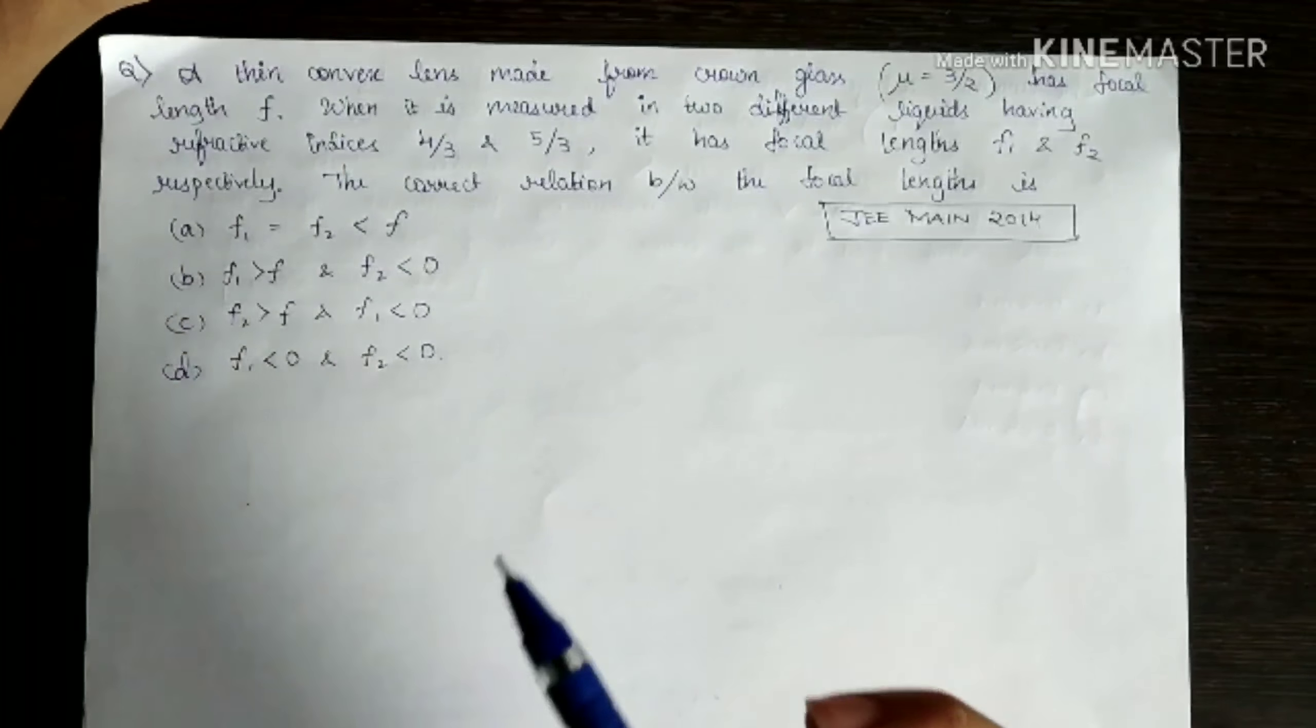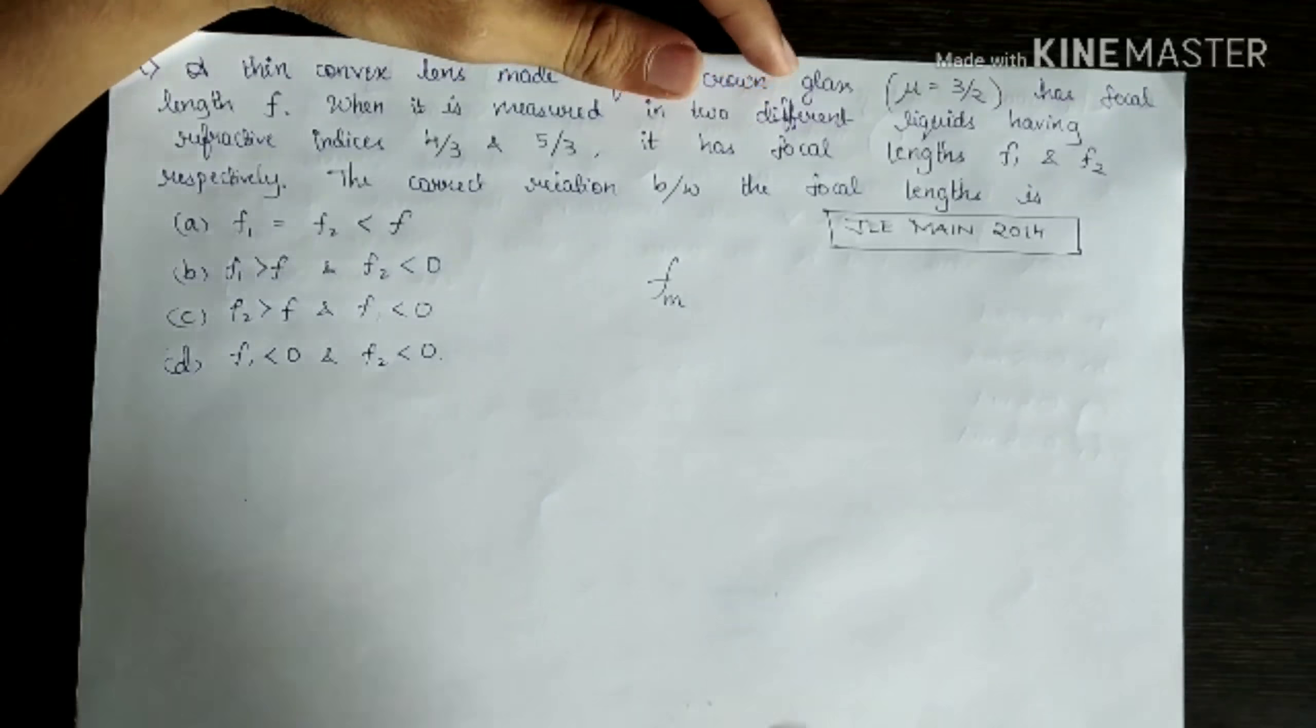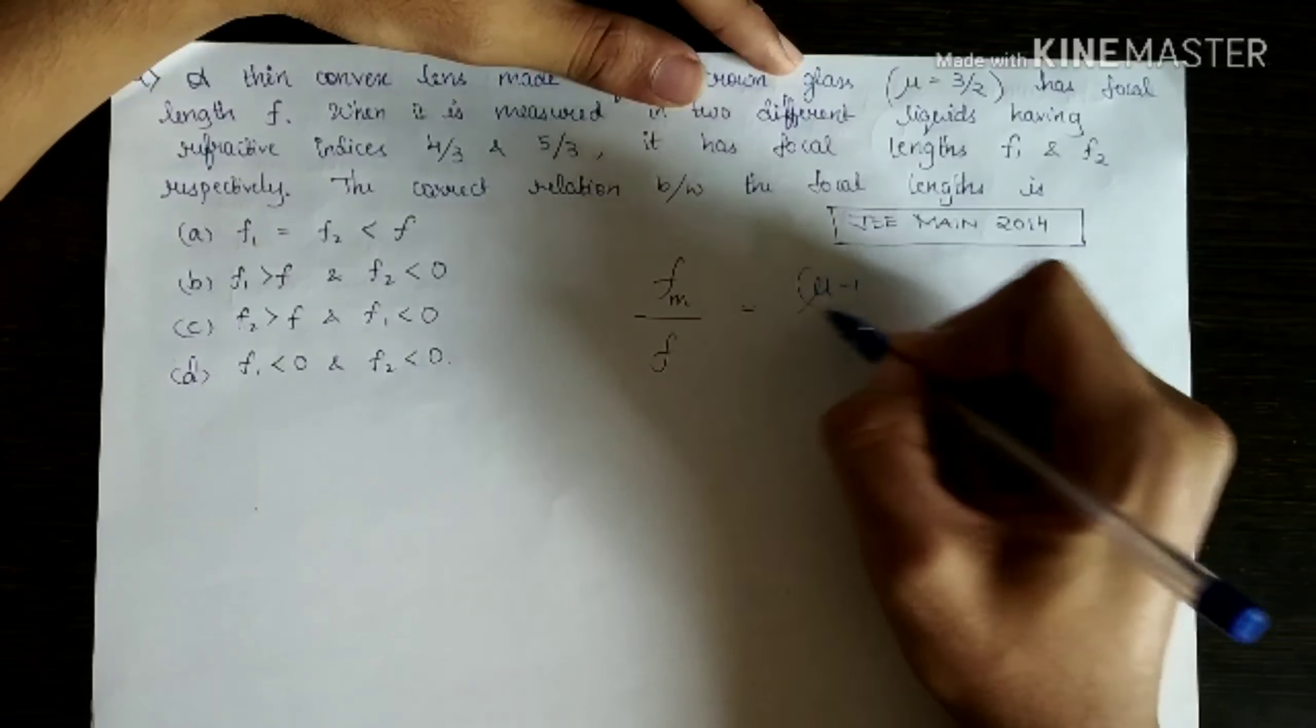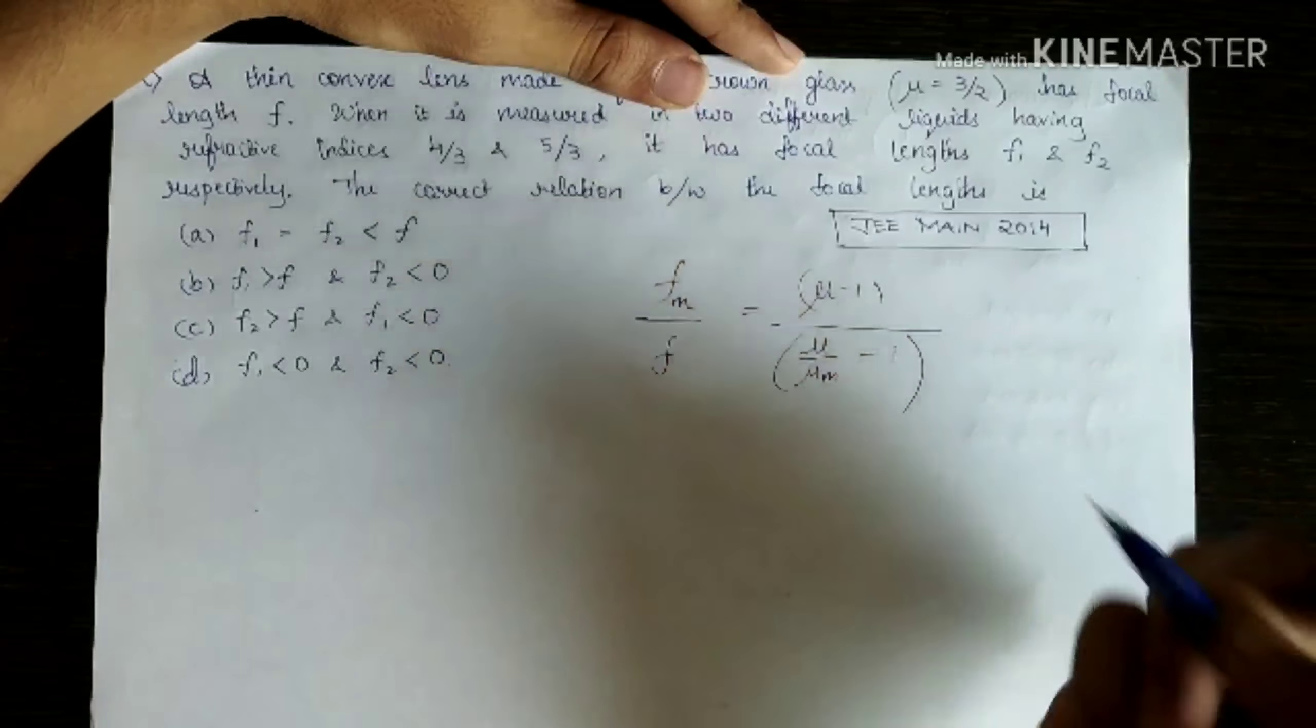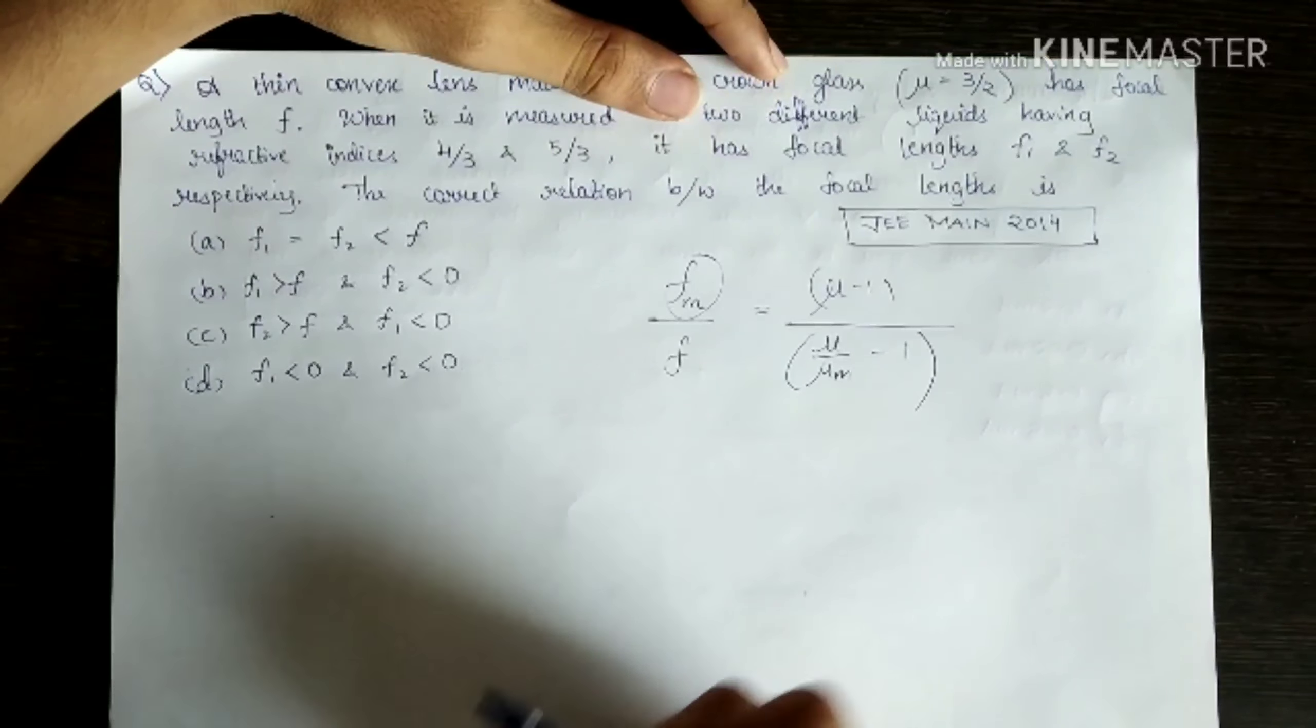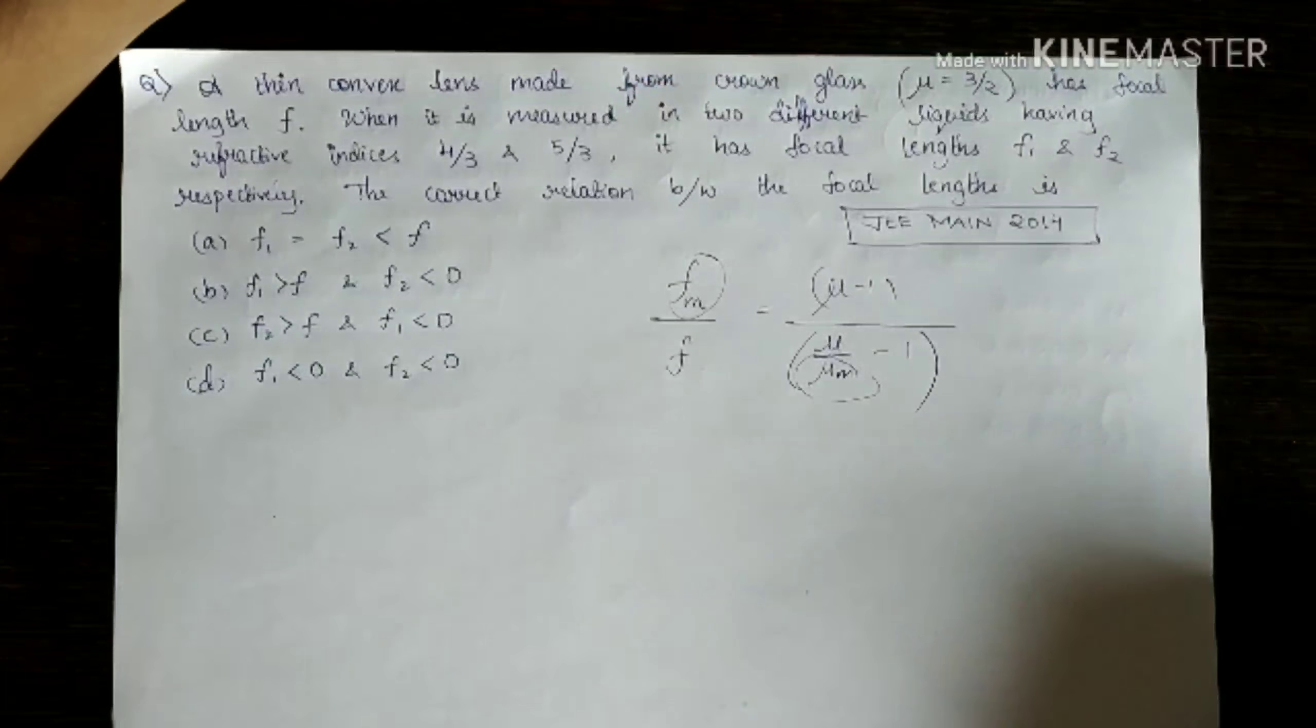So for this, as I told, there is one important formula which has to be used. Please write it down somewhere. Probably in your formula book or wherever you are writing now. Please make a note of it. That is, Fm/F = (μ - 1)/(μ/μm - 1). Easy to remember? Yes, it is. Now, Fm denotes focal length in medium, μm denotes refractive index of the medium in which the lens is placed.